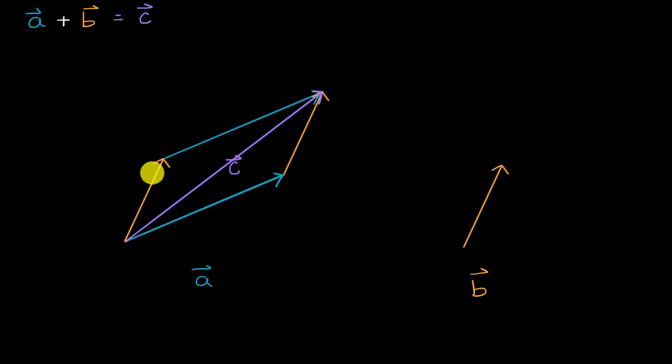If you just add by putting the head to tail of the two vectors and you construct a triangle, the parallelogram just helps us appreciate that you could start with the yellow vector and then the blue vector, or the blue vector first and then the yellow vector. But either way, the sum is going to be this vector C.